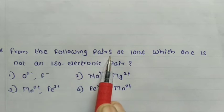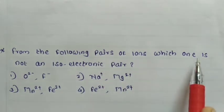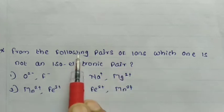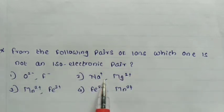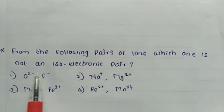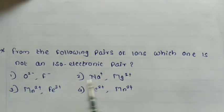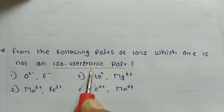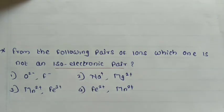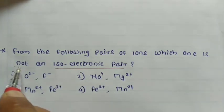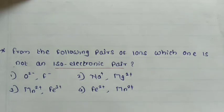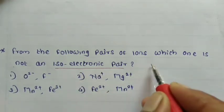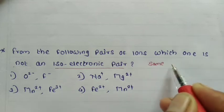See the next question: from the following pairs of ions, which one is not an isoelectronic pair? We are given 4 pairs of ions and must identify which is not isoelectronic. The term 'isoelectronic' means 'iso' = same and 'electronic' = electrons — so pairs in which both species have the same number of electrons are isoelectronic pairs.